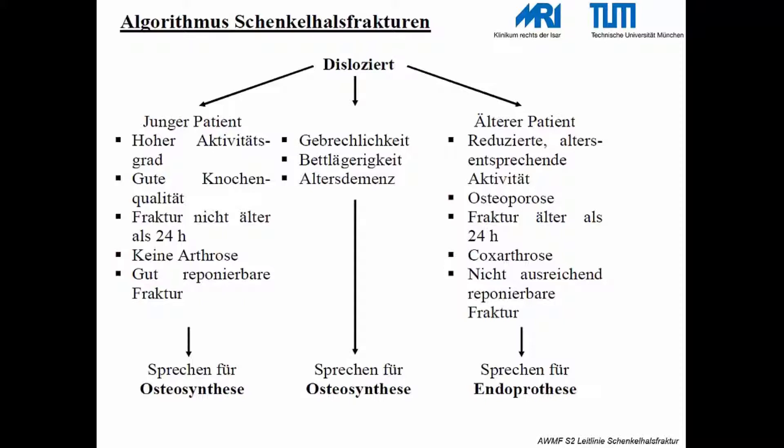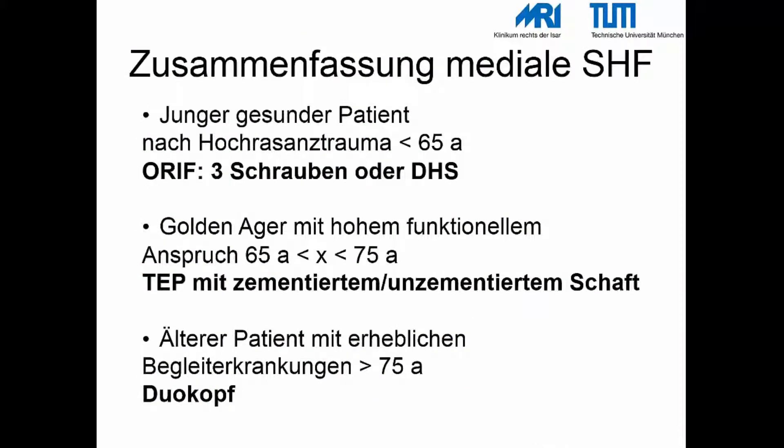Ist der Bruch disloziert, muss die nächste Frage sein: Wie alt ist der Patient? Bei einem jungen Patienten mit hohem Aktivitätsgrad sollte eher die Osteosynthese erfolgen. Ist der Patient älter und vorerkrankt, sollte eher der Hüftgelenksersatz erfolgen. Der junge Patient sollte innerhalb von 6 Stunden mit einer Osteosynthese versorgt werden. Ältere Patienten mit hohem funktionellen Anspruch erreichen das optimale Ergebnis nach Totalendoprothese, während bei noch älteren Patienten nach bipolarer Hemiprothese eine Restitutio ad integrum erzielt werden kann.